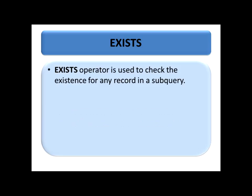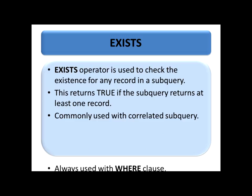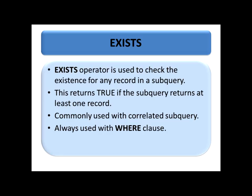Today we will see the EXISTS operator in SQL. The EXISTS operator is used to check the existence of any record in a subquery. In the main query, we have WHERE EXISTS in the subquery. If the subquery returns true for at least one record, it means EXISTS is satisfied and we will get the resultant output. It is commonly used with correlated subqueries and always used with the WHERE clause, right after it.